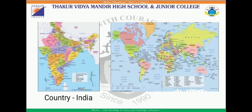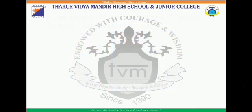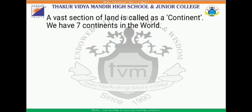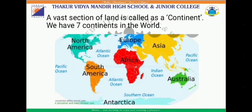And this is the map of the world. My dear students, a vast section of land is called a continent. We have seven continents in the world. They are North America, South America, Europe, Africa, Asia, Australia, and Antarctica.